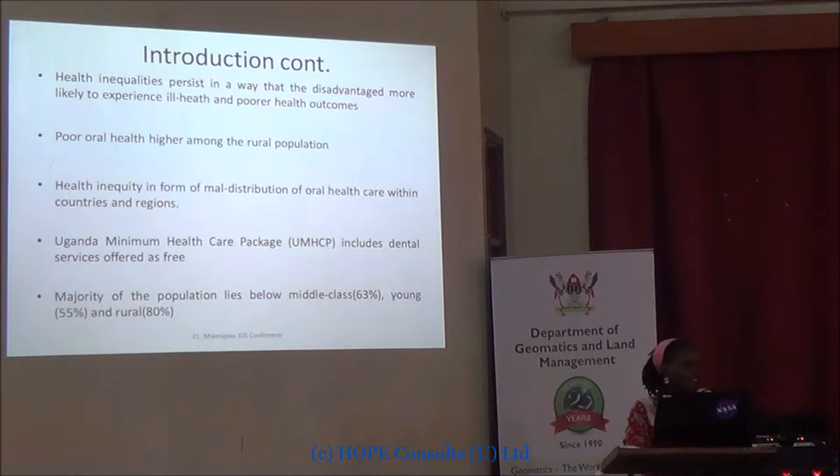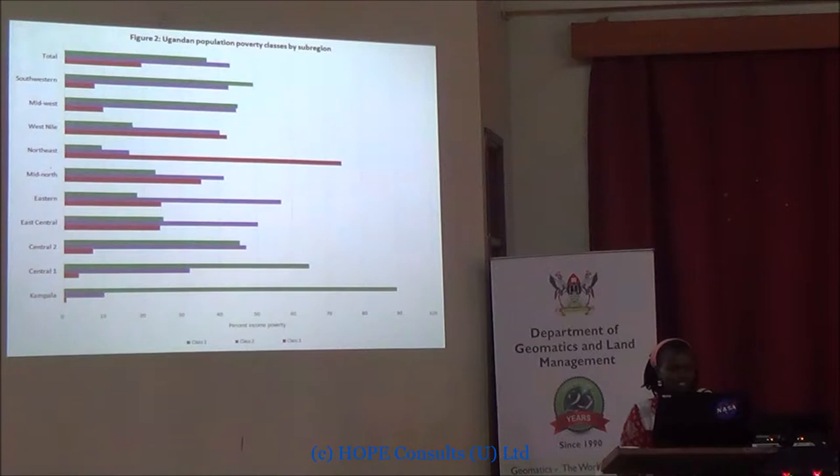Meanwhile, the middle class is defined as living on two dollars a day — about $20,000 a year — which is still very low. Most of the population, 55%, is young, and 80% is in the rural areas. We can appreciate some of these complexities. This is a graph showing poverty classes based on income poverty from the Poverty Status Report of 2014.